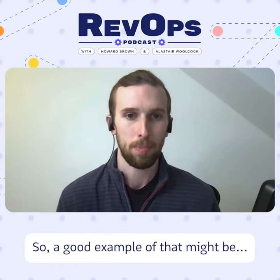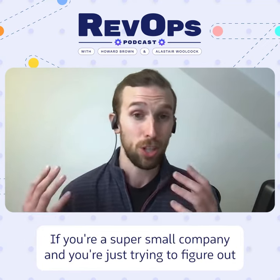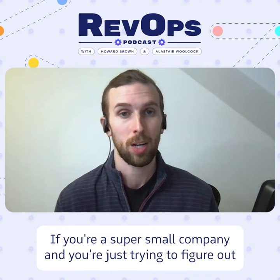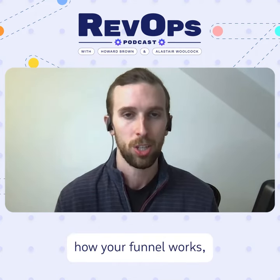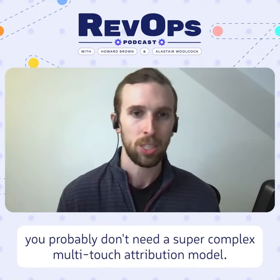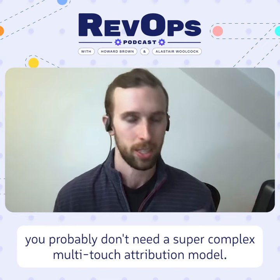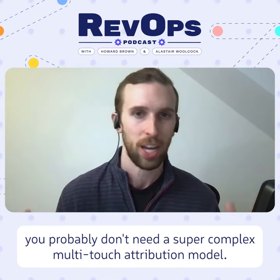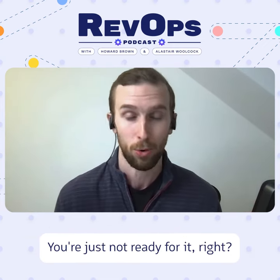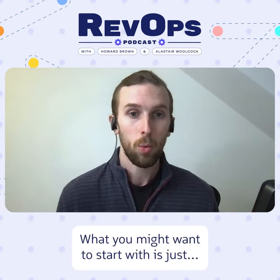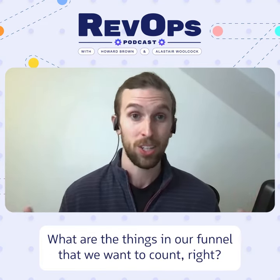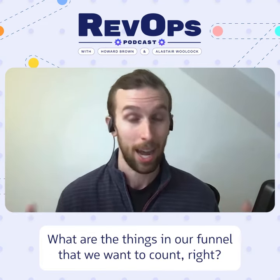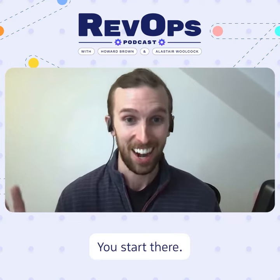A good example of that might be if you're a super small company and you're just trying to figure out how your funnel works — you probably don't need a super complex multi-touch attribution model. You're just not ready for it. What you might want to start with is just what are the things in our funnel that we want to count.